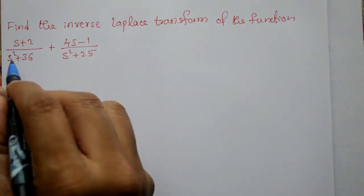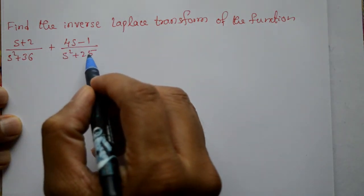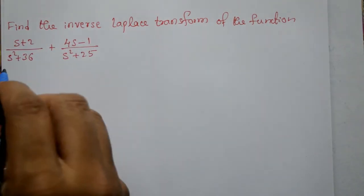...plus 2 divided by s squared plus 36, plus the second term: 4s minus 1 divided by s squared plus 25. This part is F(s) and we need f(t). Let us see how it works.